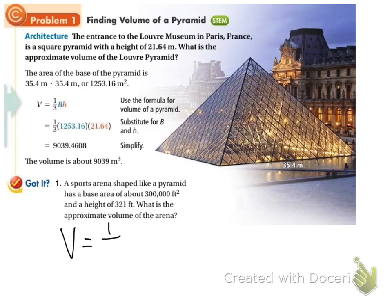V equals one-third base times height. So it says that the base area is about 300,000 feet squared. So this is one-third, and I'm going to plug in 300,000, and it has a height of 321.